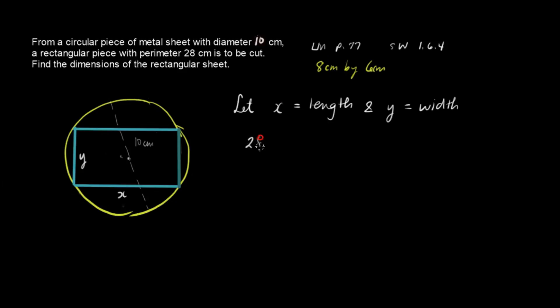So the perimeter, 28, is equal to twice the length which is x. We have 2x plus twice the width which is y.